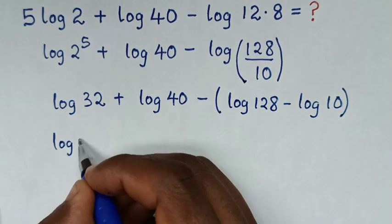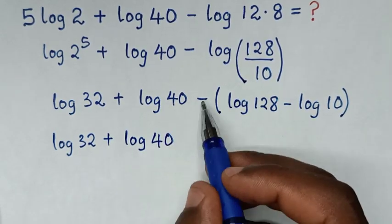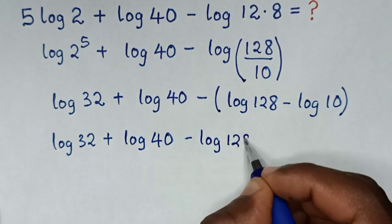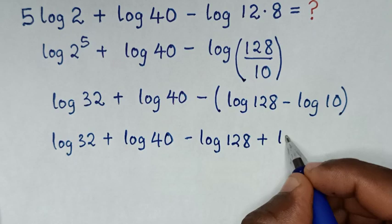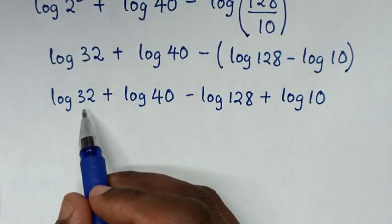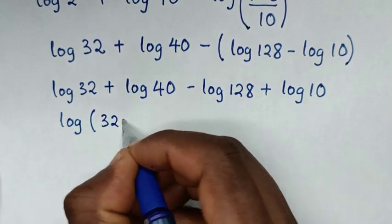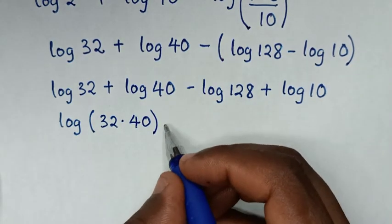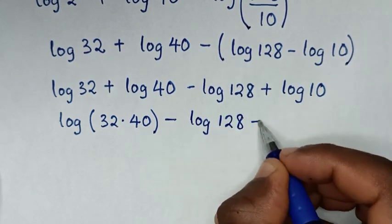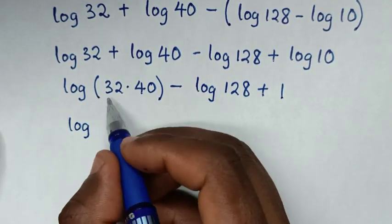Then in the next step, it will be log of 32, then plus log of 40. We'll take this negative inside the bracket, so it will be negative log of 128, and negative and negative gives positive log of 10. Then log of 32 plus log of 40 is the same as log of 32 times 40, then minus log of 128, then plus log of 10, which is 1.